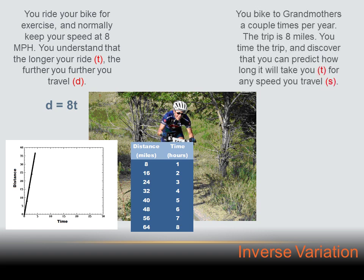Here's another problem, and I bet you could guess this is probably an inverse variation. You bike to grandmother's a couple times per year — the trip is eight miles. You discover that you can predict how long it will take, t, for the amount of time, for any speed you travel, s. Let's think about that — I have to go eight miles.